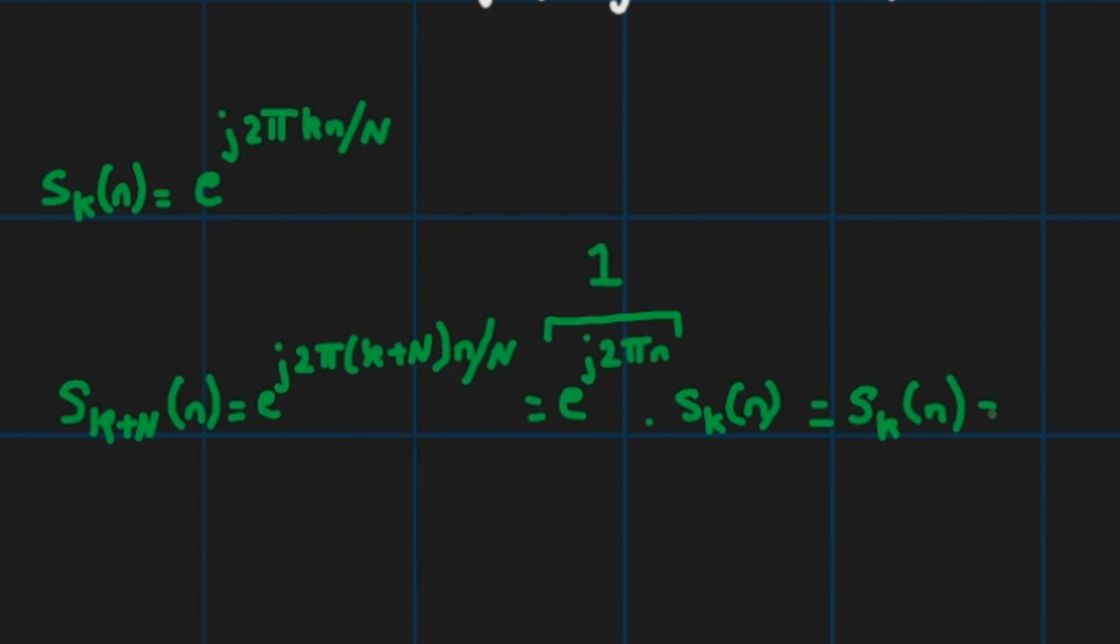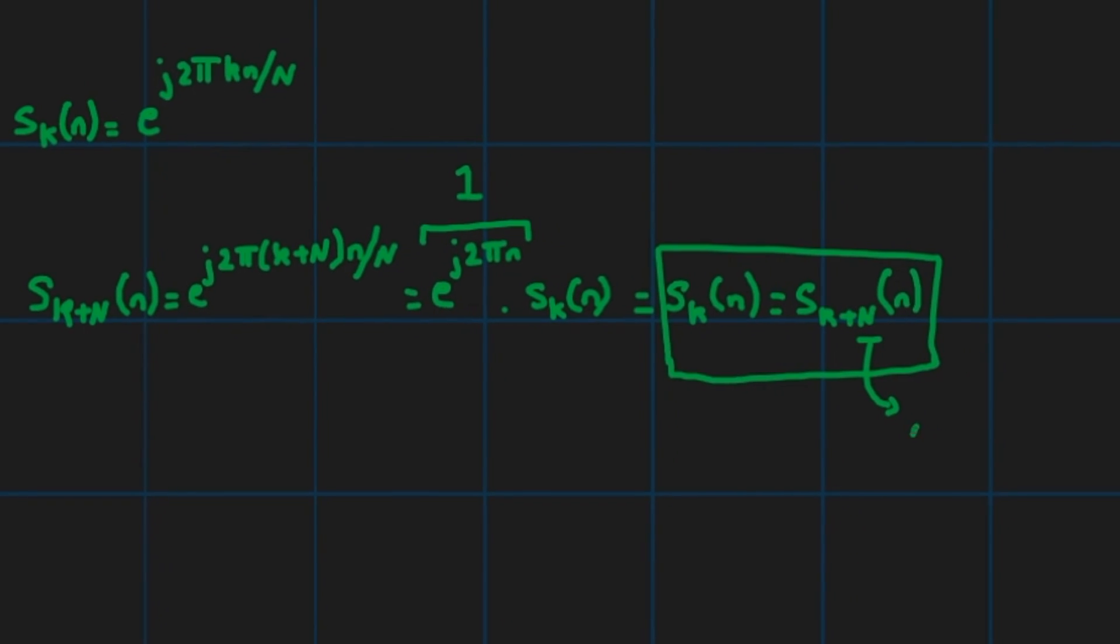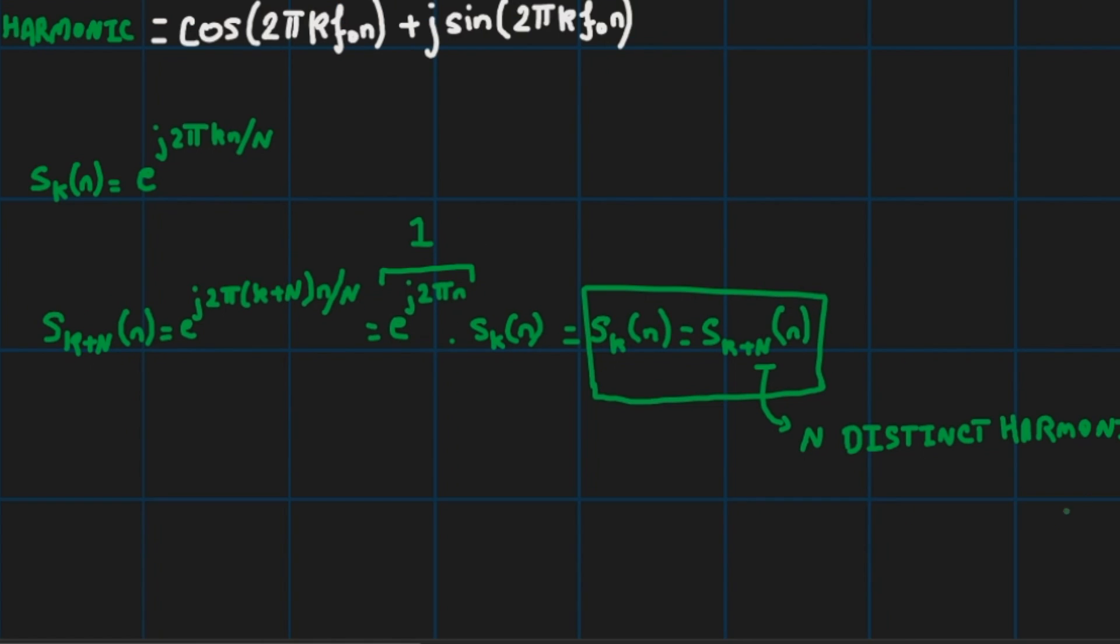So what can we say? We can say that s_k(n) is always equal to s_{k+N}(n). Now what does that actually mean? It means that we only have N distinct harmonics.